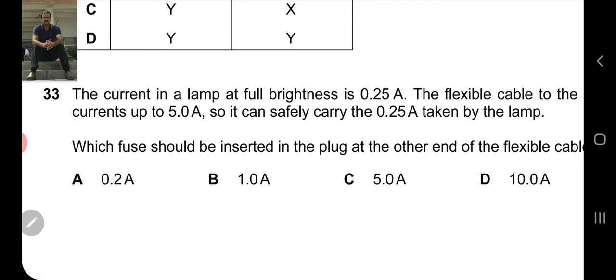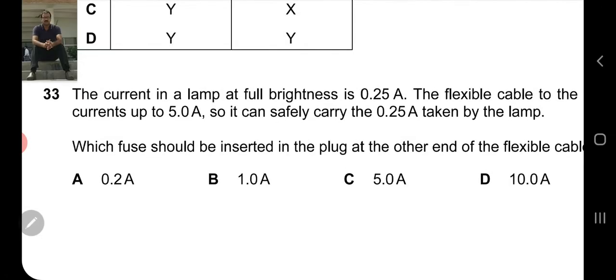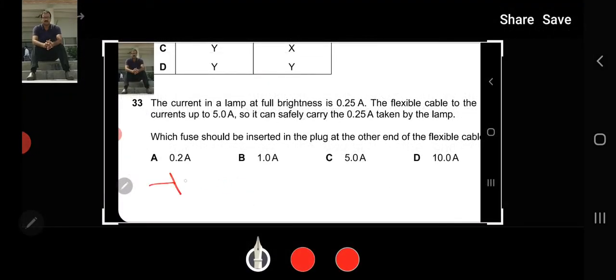Because the 0.2 ampere fuse, if you install it in this wire, it will melt when 0.2 ampere current comes. When it melts and breaks, the lamp won't receive current. If current is not provided to the lamp, it won't turn on. So 0.2 ampere cannot be used at all.